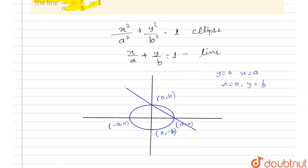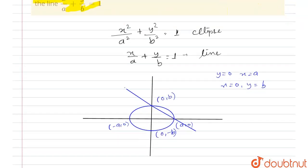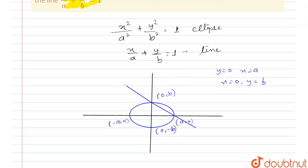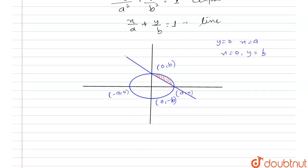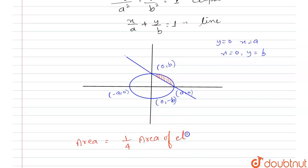Now we have to find the smallest area bounded by the ellipse and the line. We can write the area as: (1/4) times the area of the ellipse, because this is the 1/4 part of the ellipse, minus the area of triangle OAB.